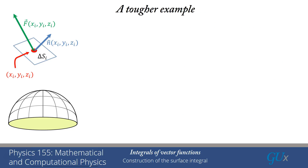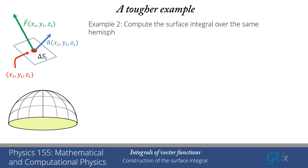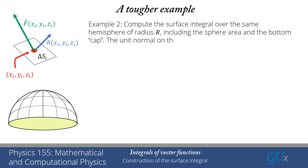That wasn't a hard example because we avoided ever having to determine the normal — we set the vector field equal to the normal so n² equaled 1 everywhere. Now we're going to look at a tougher example: we'll still integrate over the same hemisphere, but change the function we're integrating. The vector-valued function f will now be different.